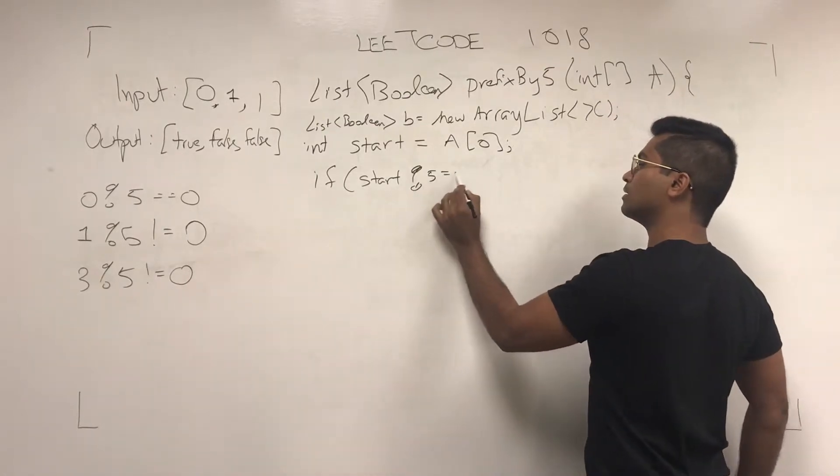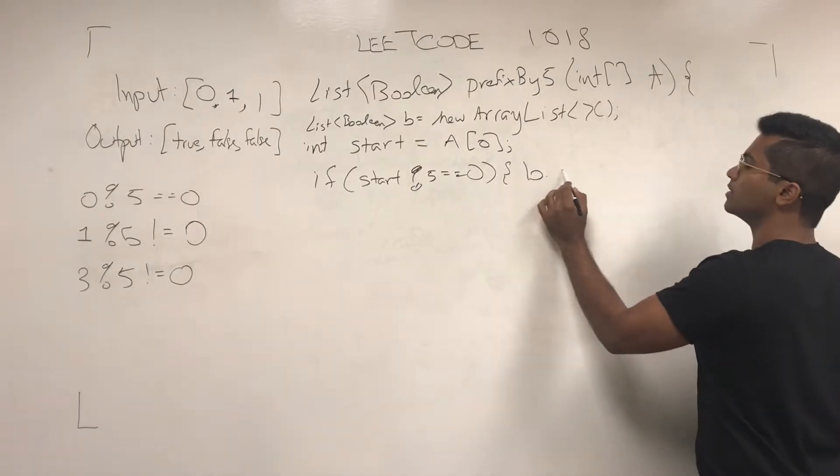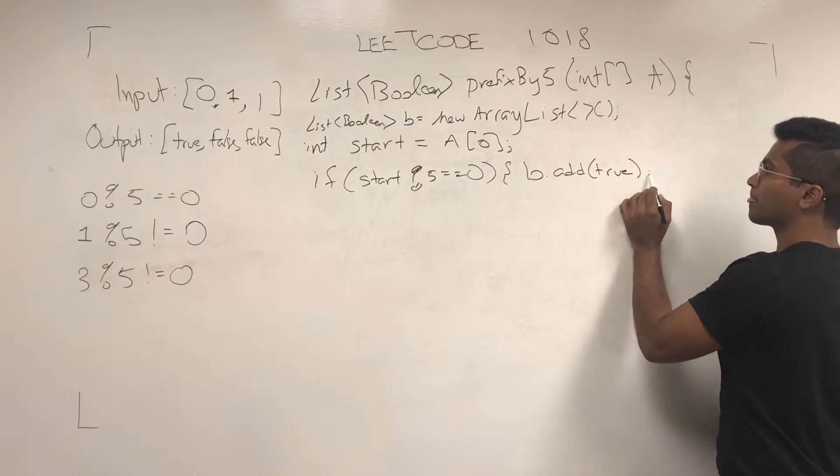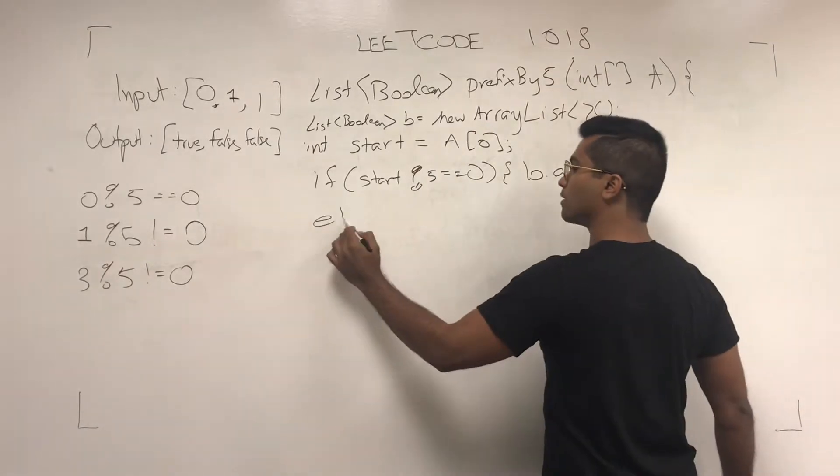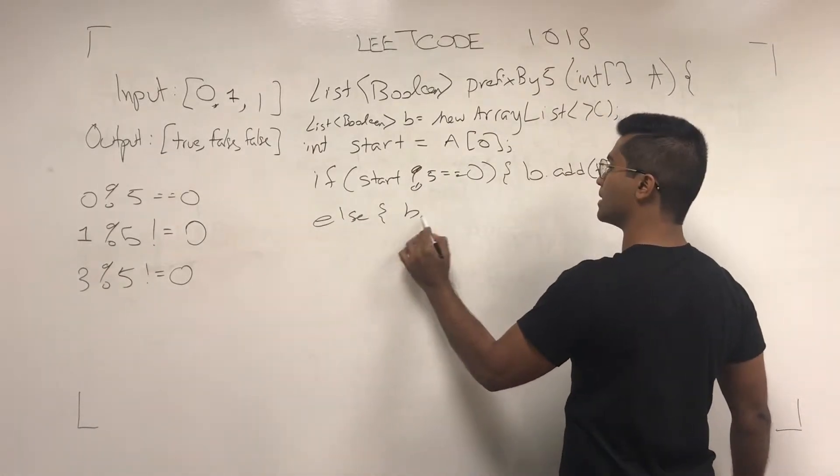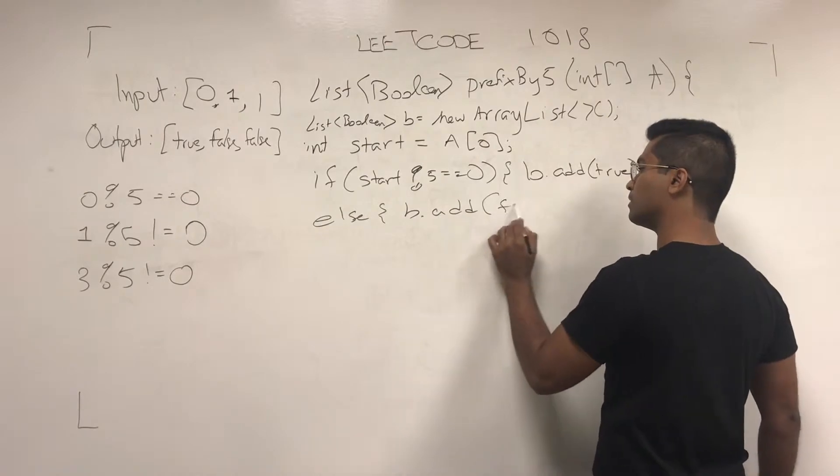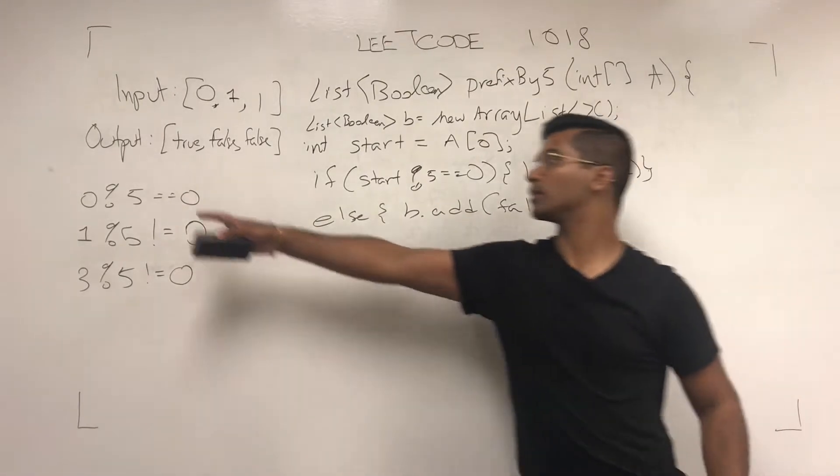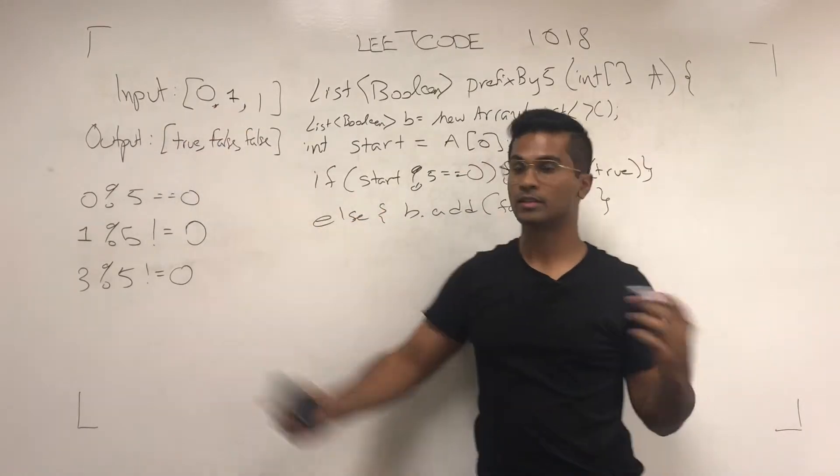we add B.add(true), else B.add(false). So the first one, 0, is true in this case. Now we'll get into the meat of the for loops.